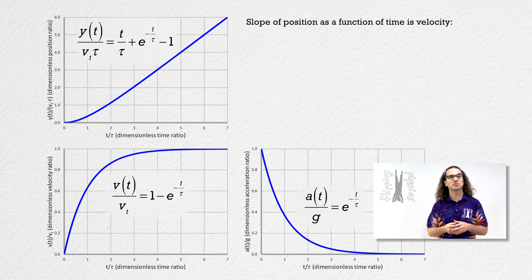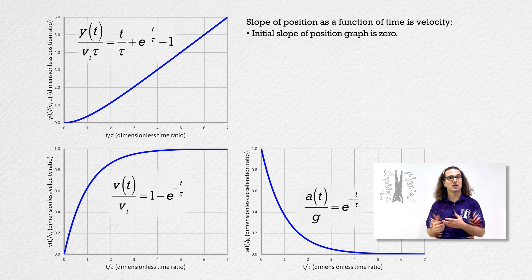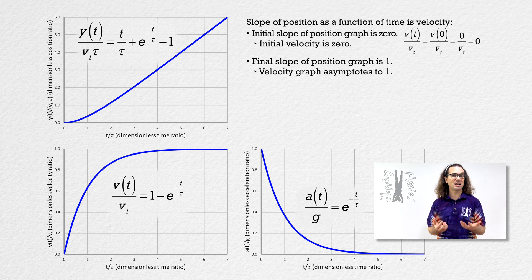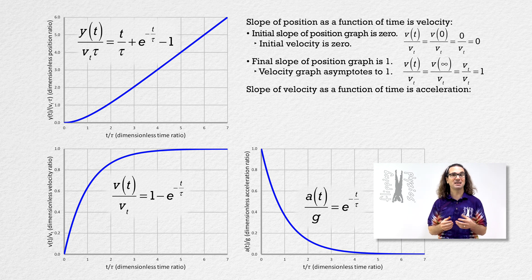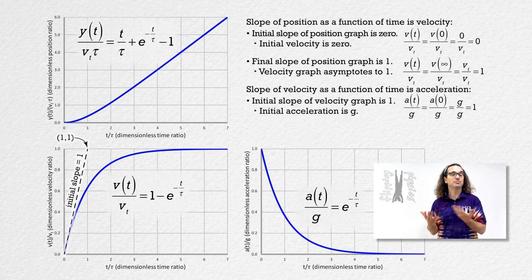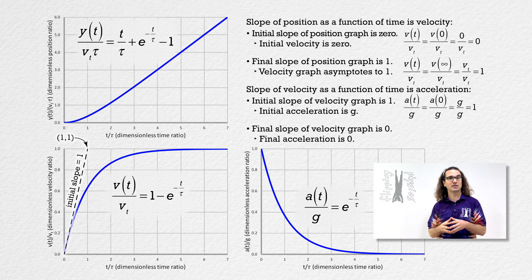Also, we know the slope of velocity as a function of time is acceleration. That is why the initial slope of the velocity graph is one — because the initial acceleration of the object is the acceleration due to gravity, and acceleration due to gravity divided by acceleration due to gravity equals one. The final slope of the velocity graph is zero because the final acceleration is zero, and zero divided by acceleration due to gravity equals zero.